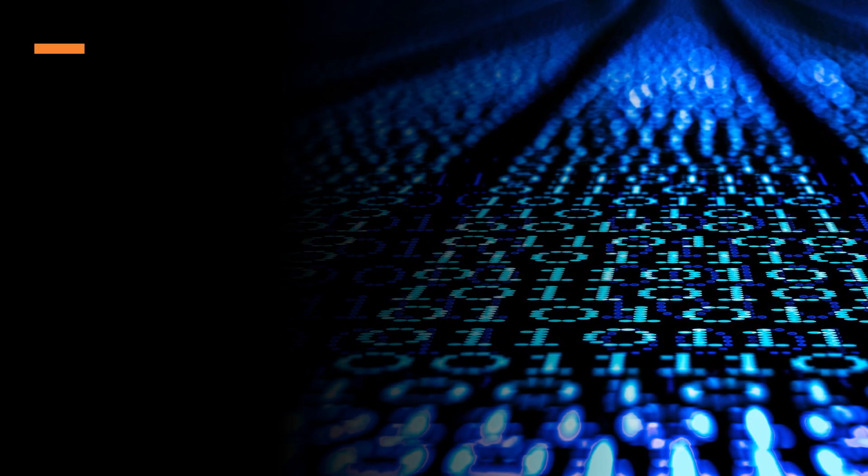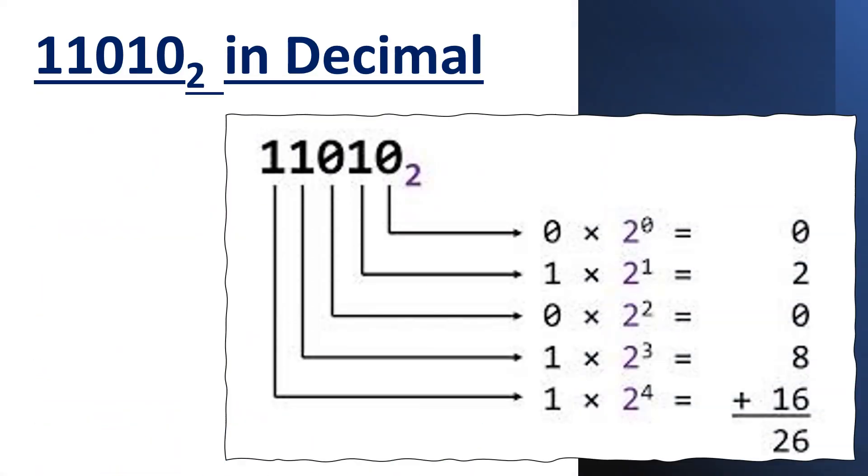Converting binary to decimal numbers. Write the place value of each position below the given number in powers of base 2. Multiply each place value by the power of base 2, and add all the products together to get the answer.